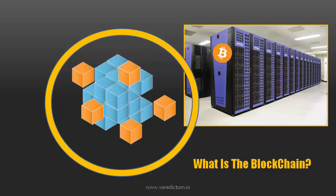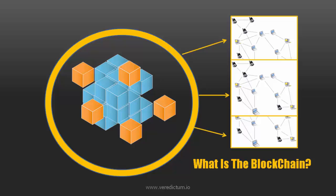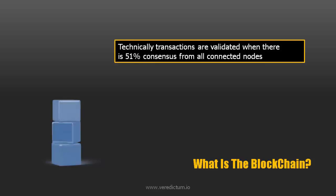Once solved, that confirmed block of data is then broadcast to the other 5,000 computers — in other words, the nodes — on the network for their agreement. Once they have agreed that block of data, usually after 51% agreement or consensus, that block of data is permanently locked on top of the previous block of data to form a chain.